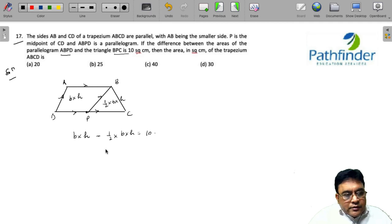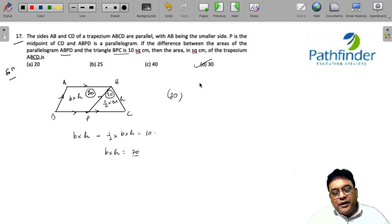Given to us, which means we get the value of b into h as 20. So this area is 20, so half bh must be 10. So the total area must be 30. You're asked to calculate the area of trapezium ABCD, which must be 30 square centimeters.